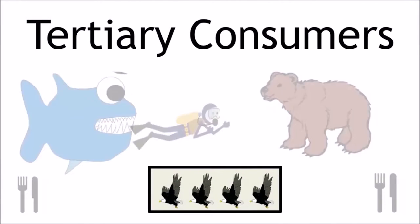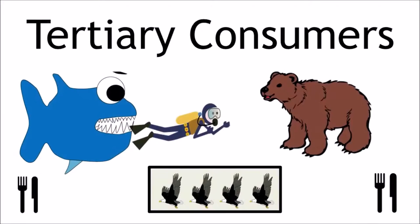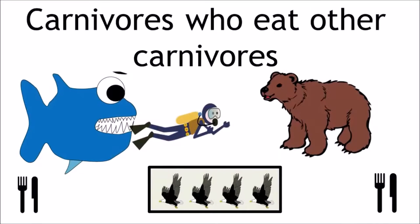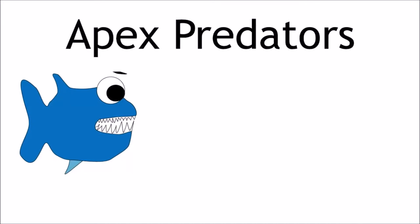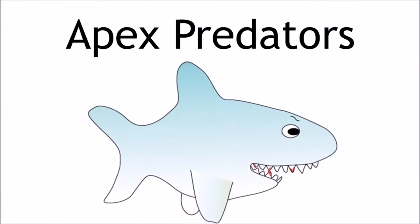Secondary consumers are followed by tertiary consumers. Level 4 is carnivores who eat other carnivores. Level 5 is apex predators, the top of the food chain, where the organism isn't eaten by other animals.